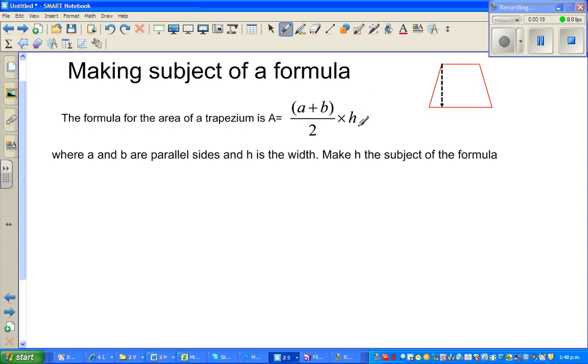divided by 2 times h. Now this is a trapezium - these are the two sides, this is a and this is b, and this is your h. Where a and b are the parallel sides and h is the height.